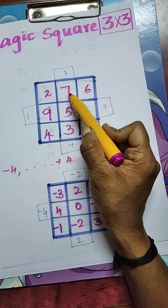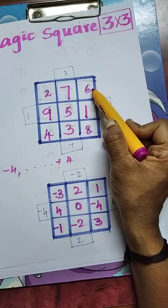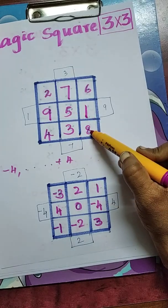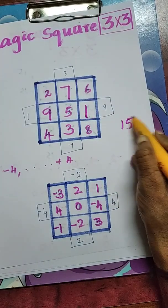2 plus 7 is 9, 9 plus 6 is 15. 2 plus 5 is 7, 7 plus 8 is 15. Yes, sum is 15 here.